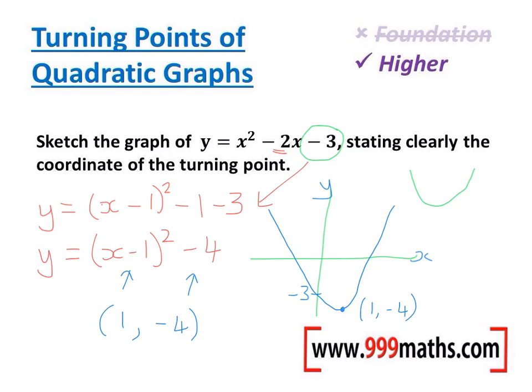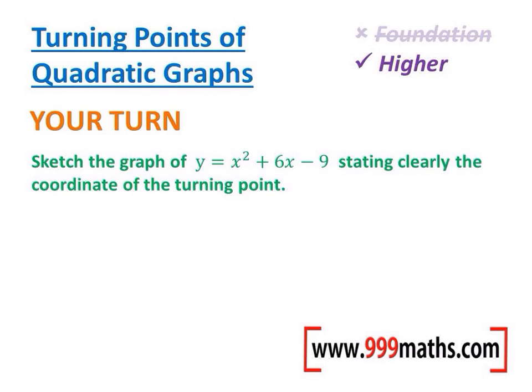It hasn't asked me to do anything else on the graph. No roots, not where it crosses any axis. It just wants to know the coordinate of the turning point. OK, so a very similar question now for you to try and do. Start by working out where it crosses the y-axis, the y-intercept. Complete the square to work out the coordinate. And pause now before the answer comes up.